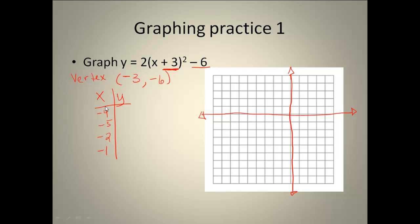You plug the x value back in and then calculate it out. So when you plug in negative 4, you should get negative 4 back. When you plug in negative 5, you should get 2. When you plug in negative 2, you should get negative 4. And when you plug in the negative 1, you should get a 2 back.